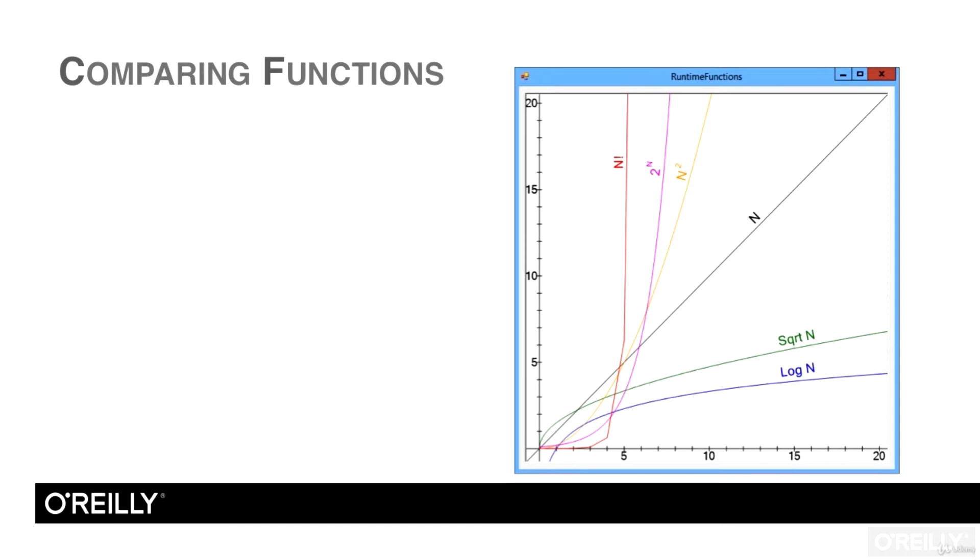So let's work through the curves. On the bottom, the blue log function grows the slowest of all. That means programs with order log n behavior are generally extremely fast. Next comes the green curve representing the square root of n. This one also grows very slowly, so algorithms with order square root of n performance also tend to be very fast.